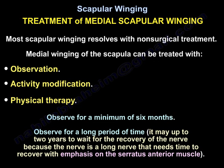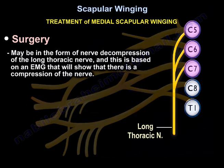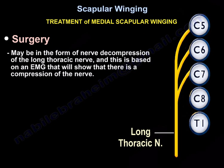Observe for a minimum of six months — it may take up to two years to wait for nerve recovery, as it is a long nerve that needs time to recover, with emphasis on the serratus anterior muscle. Surgery may be in the form of nerve decompression of the long thoracic nerve, based on EMG showing compression of the nerve.